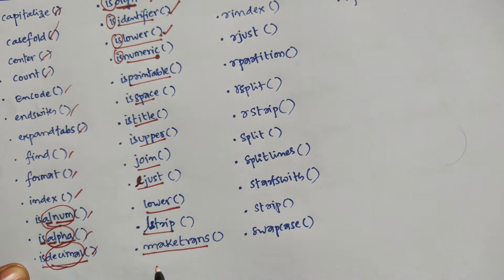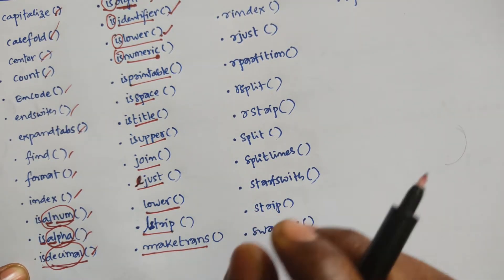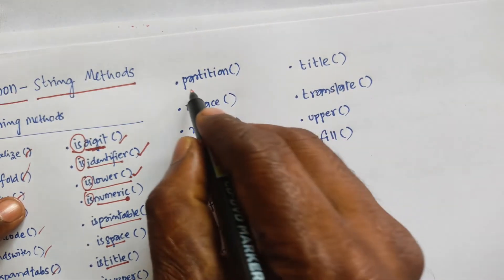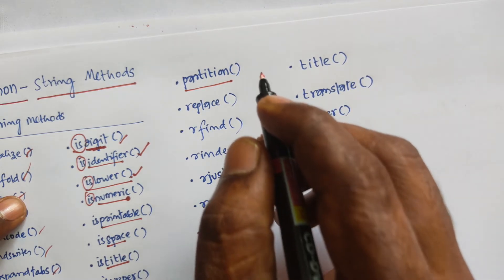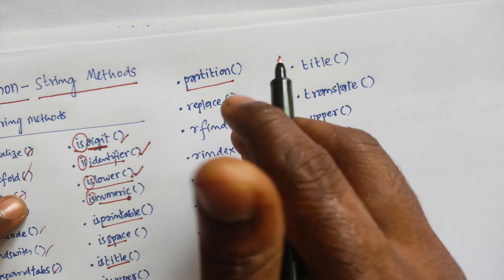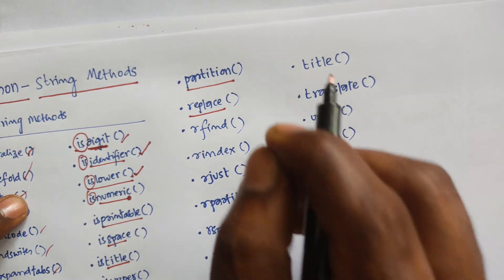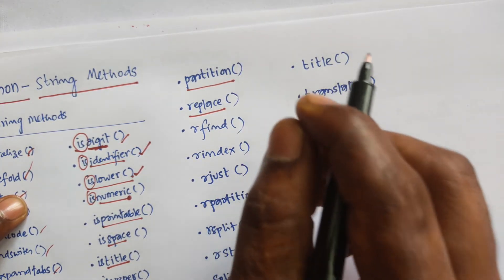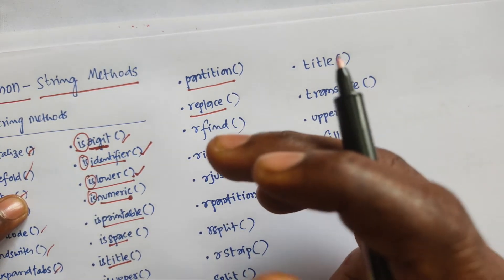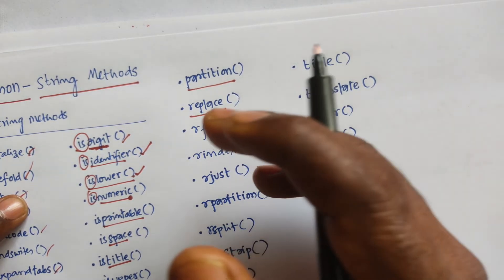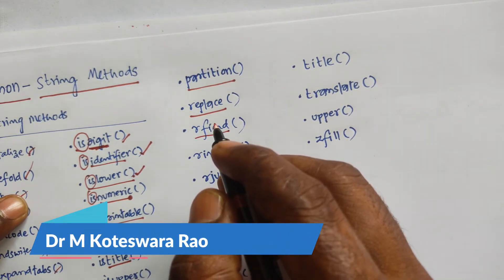Next is maketrans, which returns a translation table to be used in translations. Next is partition, which returns a tuple where the string is parted into three parts. Next is replace, which returns a string where a specified value is replaced with another specified value — for example, a letter 'k' can be replaced by 'l'.